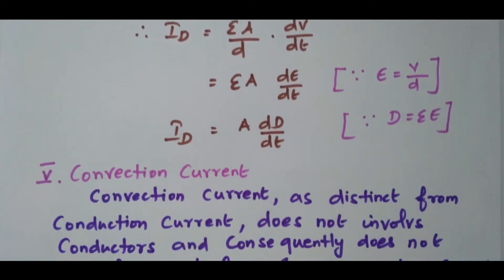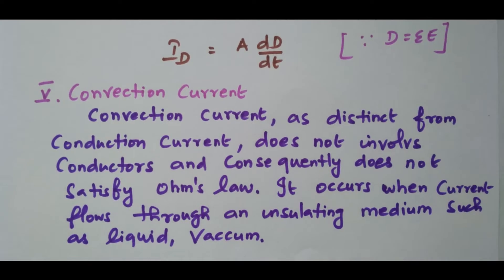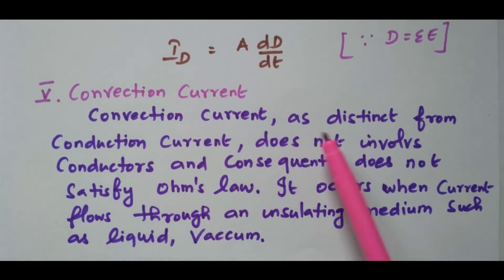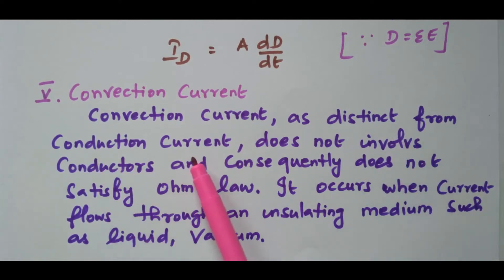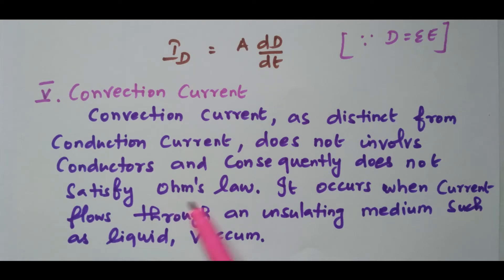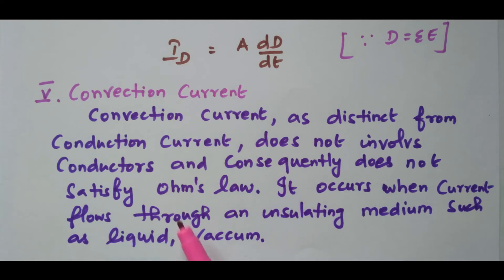Now we will see the convection current. Convection current is distinct from conduction current — it does not involve any conductors and does not satisfy Ohm's law. It occurs when current flows through an insulating medium such as liquid or vacuum.